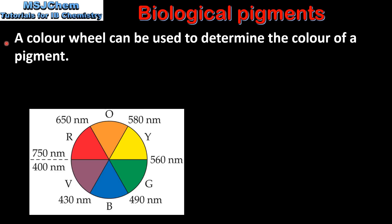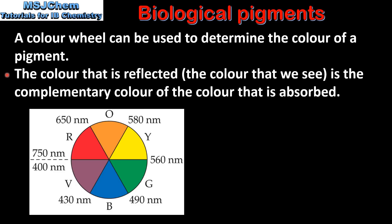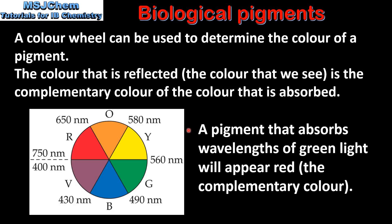A color wheel can be used to determine the color of a pigment. The color that is reflected, which is the color that we see, is the complementary color of the color that is absorbed. So for example, a pigment that absorbs wavelengths of green light will appear red. By looking at the color wheel, a pigment that absorbs green light will reflect the complementary color, which is red.